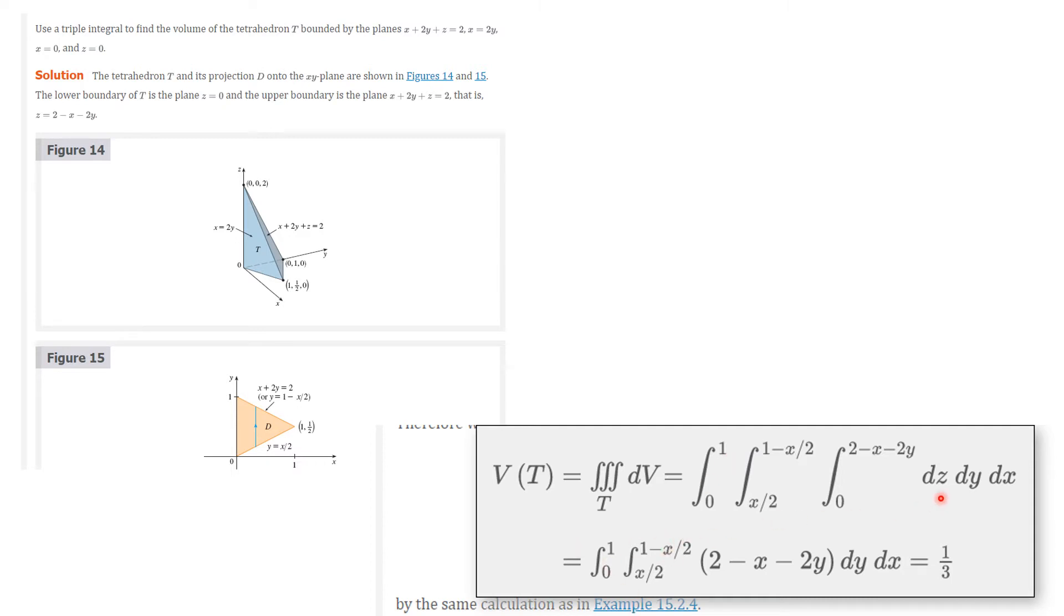So we're going to compute the integral then. When we integrate dz, we just get z. We plug in that and 0 and subtract and we get this. This is a function of x and y. And you should complete this integral, but we're just showing you the final answer. You're going to get one-third if you complete this integral.